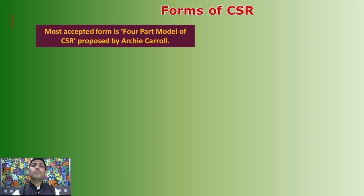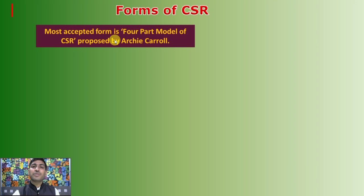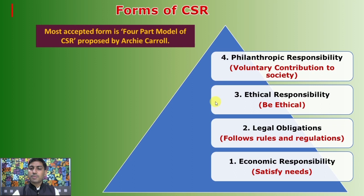Now we move towards the forms of CSR. There are four different forms, and the most popular or most accepted form is the four-part model of CSR proposed by scientist Carroll. According to him, the first form is economic responsibility — the basic need is to satisfy the needs, and whatever we produce should be an economical one.